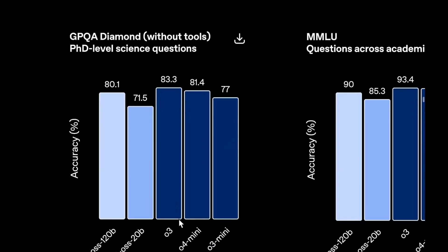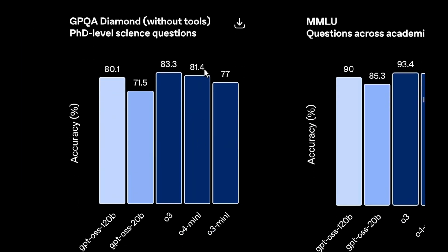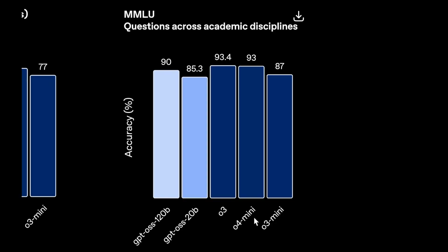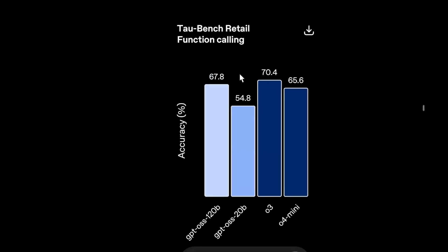Talking about reasoning, O4 mini scores 81.4 and GPT OSS 120B scores slightly lower at 80.1. It is a smaller and cheaper model compared to O4 mini, but according to benchmarks it performs on par. On the MMLU benchmark, O4 mini scores 93 and GPT OSS scores 90 — again, a neck-to-neck performance. When it comes to function calling, O4 mini scores 65.6 and GPT OSS 120B actually surpasses it with 67.8.